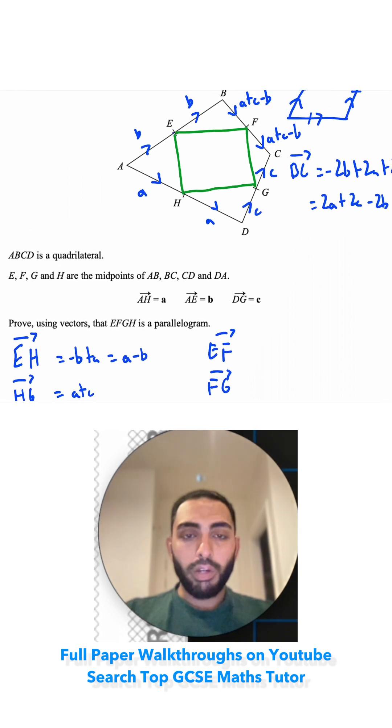E to F, we're going to go up to B, so it's B plus A plus C minus B. These B's will cancel each other out, so we're just left with A plus C.